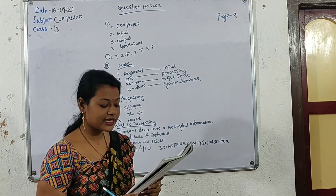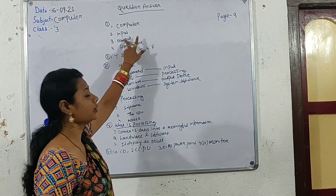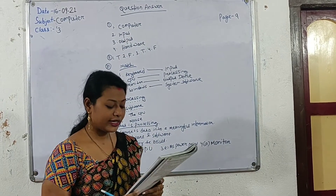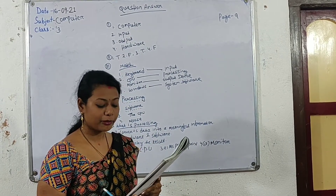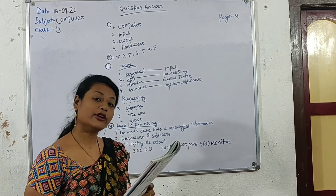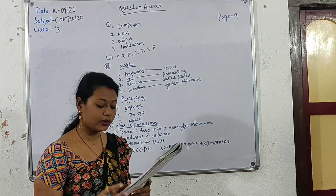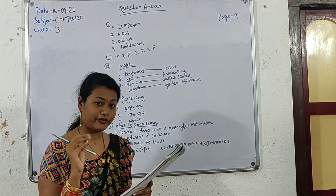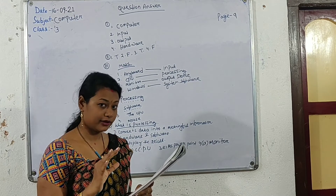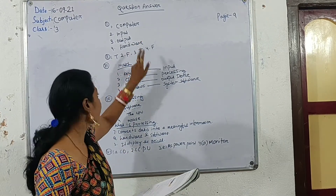Third number: After processing, the result displayed on the monitor is called the output. The third number answer is output. Fourth: This refers to the part of the computer that you can touch or feel. I know you know this very well — I discussed about what you can touch or feel, the example of hardware. The answer is hardware.